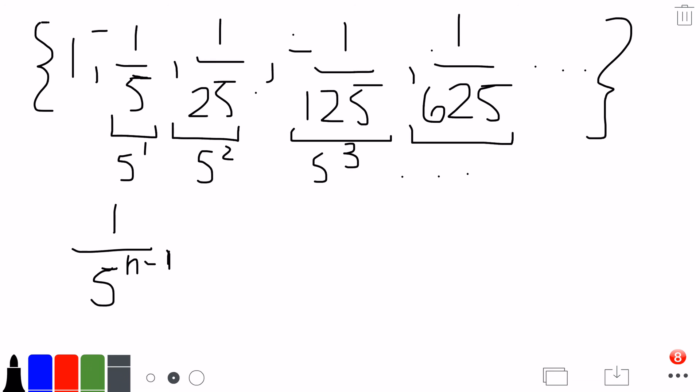This would give us our sequence except for the alternating negatives and positives. So that won't work either. We could raise the entire fraction to the power n minus 1.